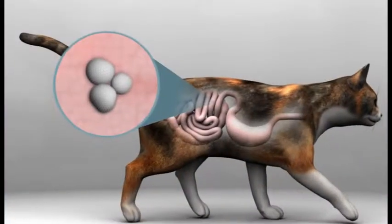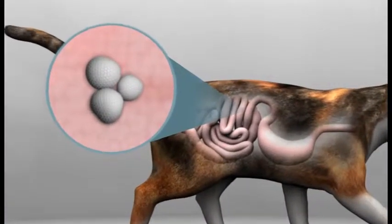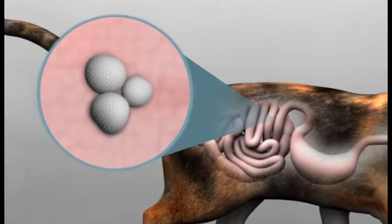Cryptosporidium felis is a protozoal parasite that can infect the cells lining the cat's small intestine.